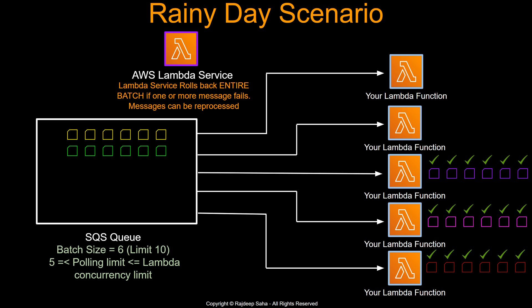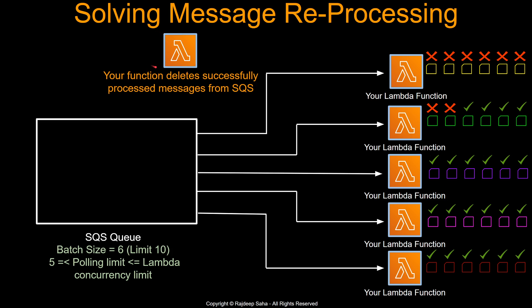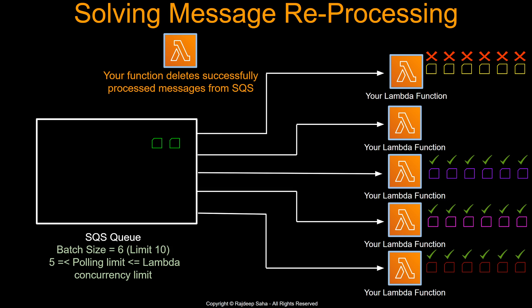There is another way to avoid this, which is generally used in real-world production. Instead of the Lambda service deleting the message, you can delete the message from SQS using your Lambda code and the Boto3 SDK or whatever SDK you choose. For the mixed batch case, this Lambda processes the four messages and deletes just those four from SQS — only the unsuccessful messages are reverted back. So next time another copy of the Lambda picks up messages, it will not reprocess the already-processed messages; it will only pick up the two messages that failed.